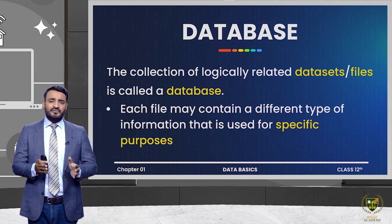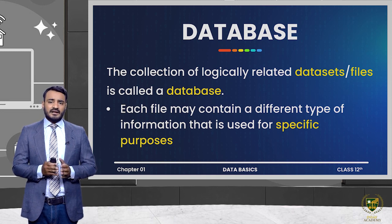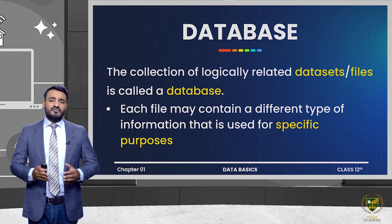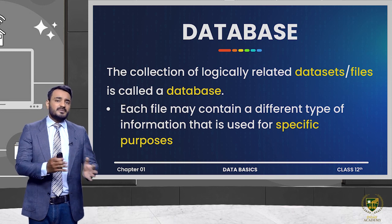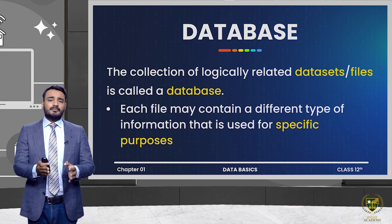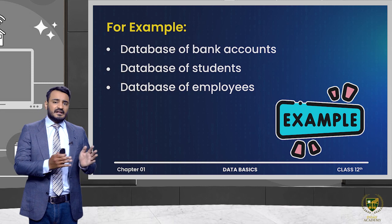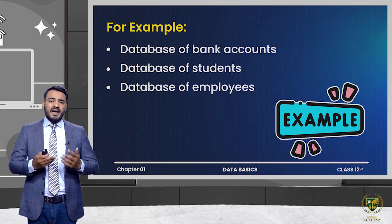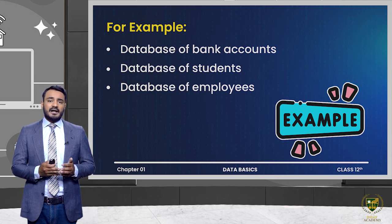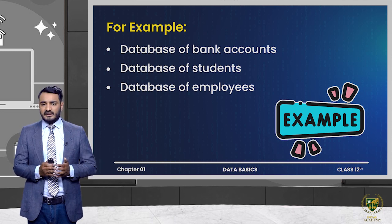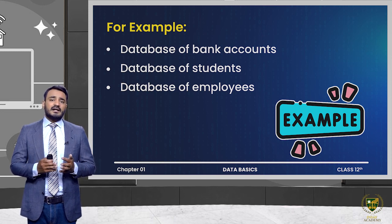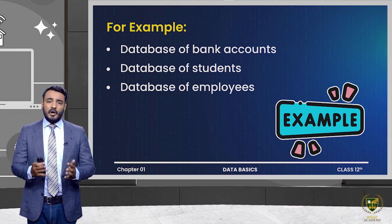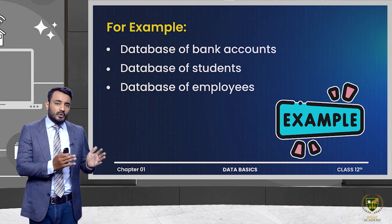In a database, different types of files are stored, and in those different types of files, different types of information are stored. This information is stored for a specific purpose. For example, in a bank account, data stored in computerized form is basically stored in a database. Similarly, in a college or university, students' data is stored in a database, and in any organization, employee data is also stored in a database.